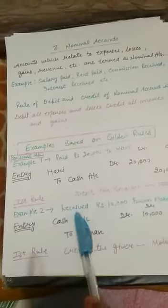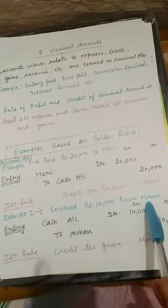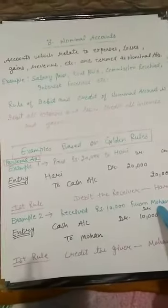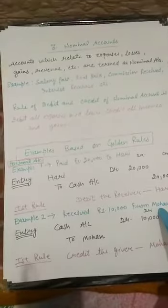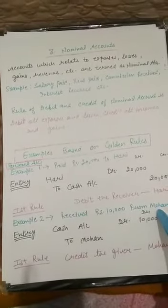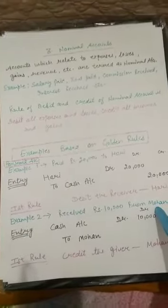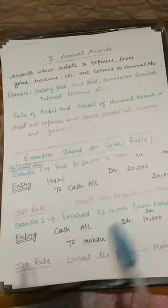Example number two: received rupees 10,000 from Mohan. Here Mohan is the giver, so Mohan will be credited. The entry will be: cash account debit to Mohan. Credit the giver — Mohan is the giver. So the first rule is applied: debit the receiver on one side and credit the giver on the other.